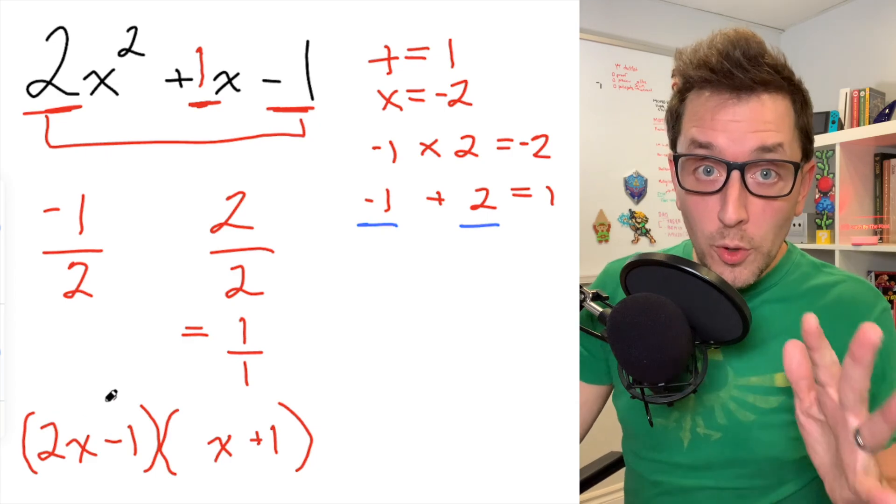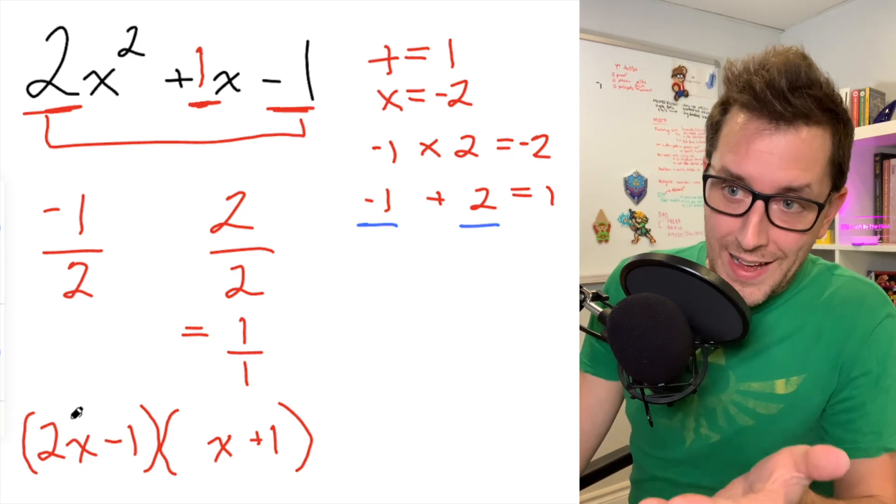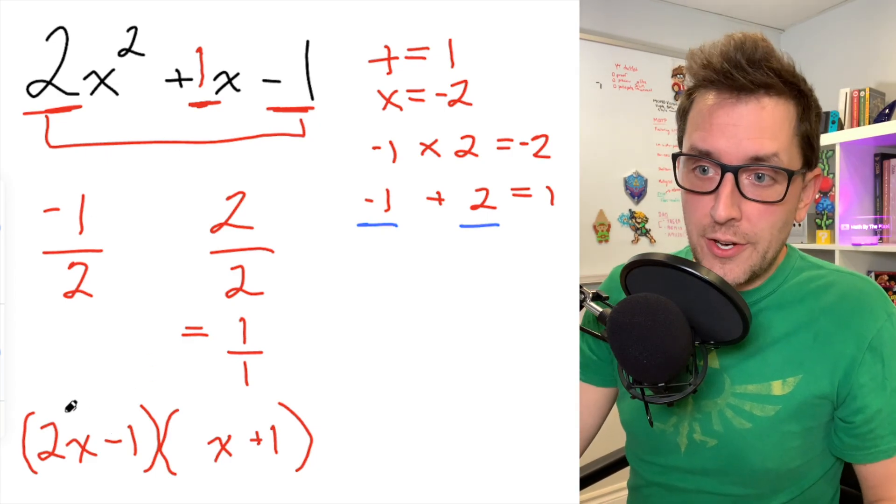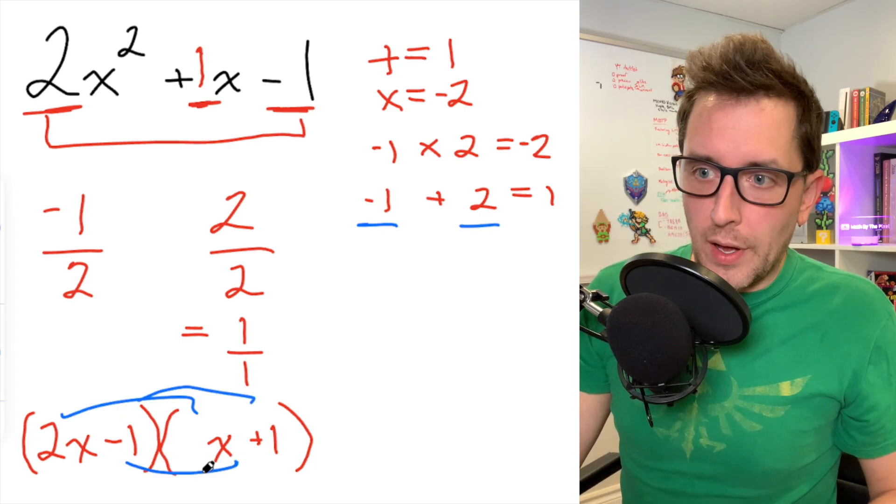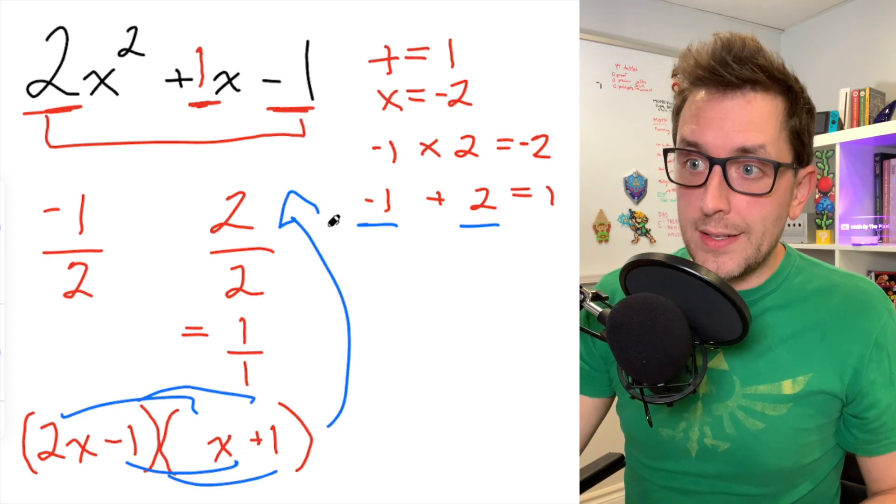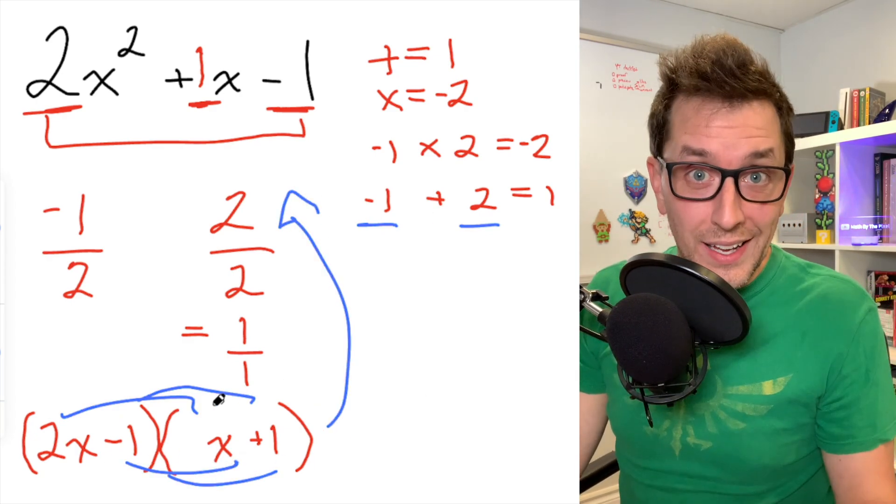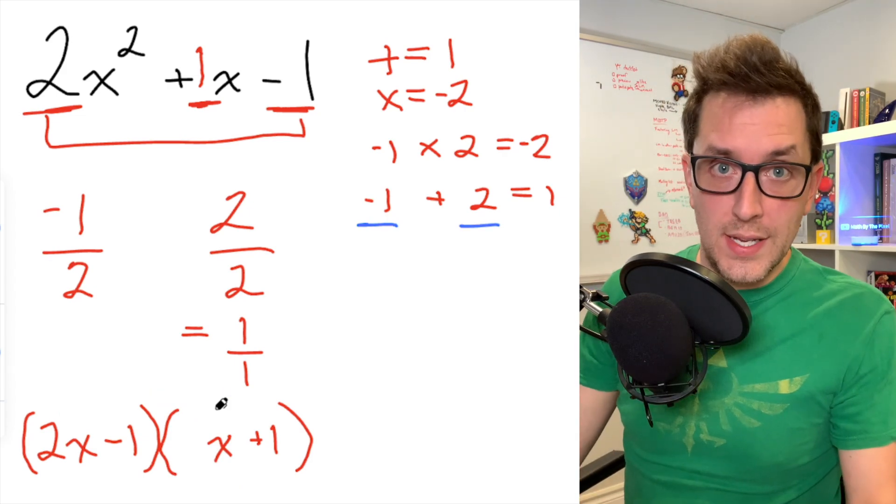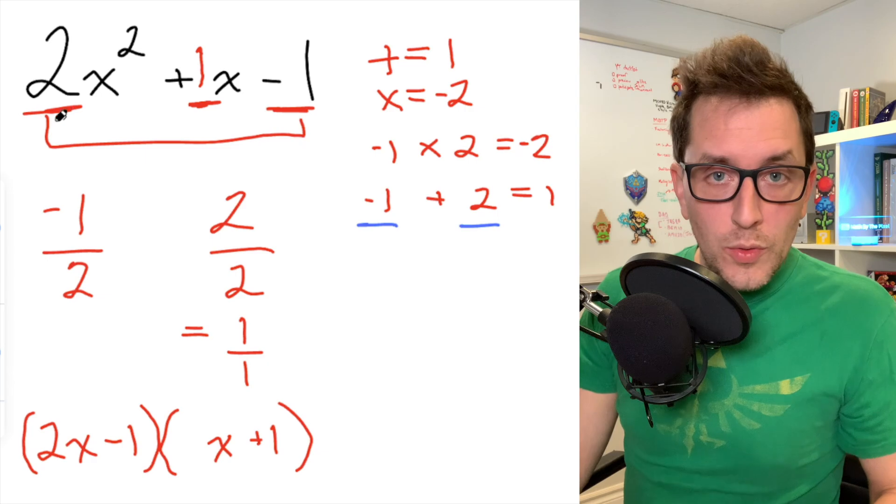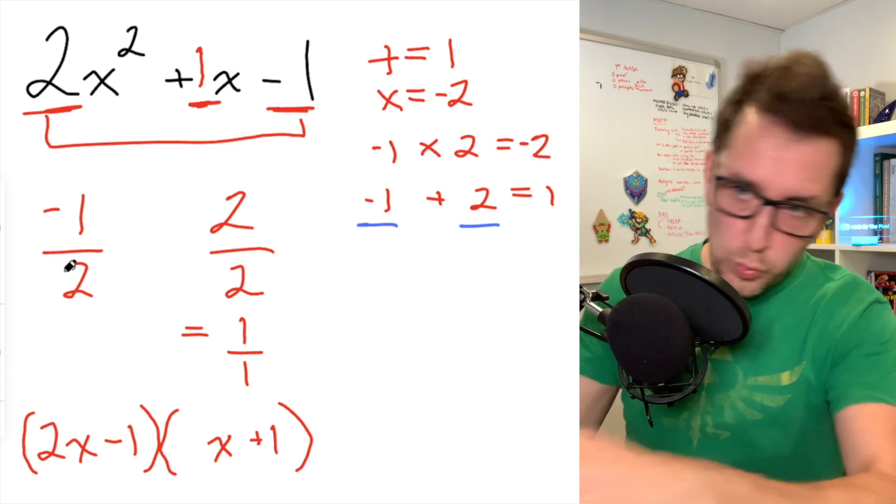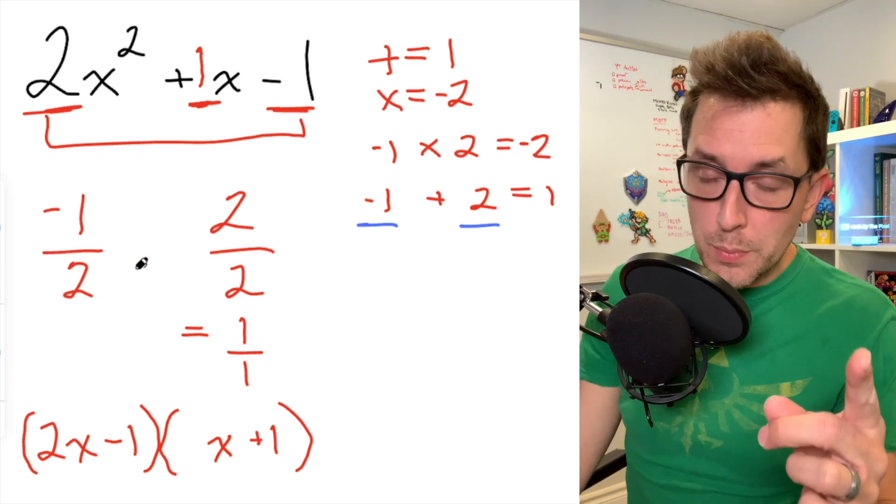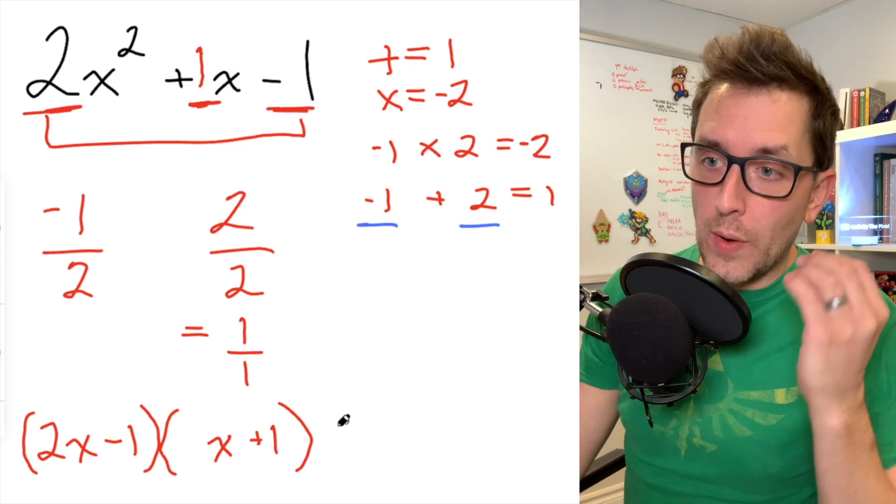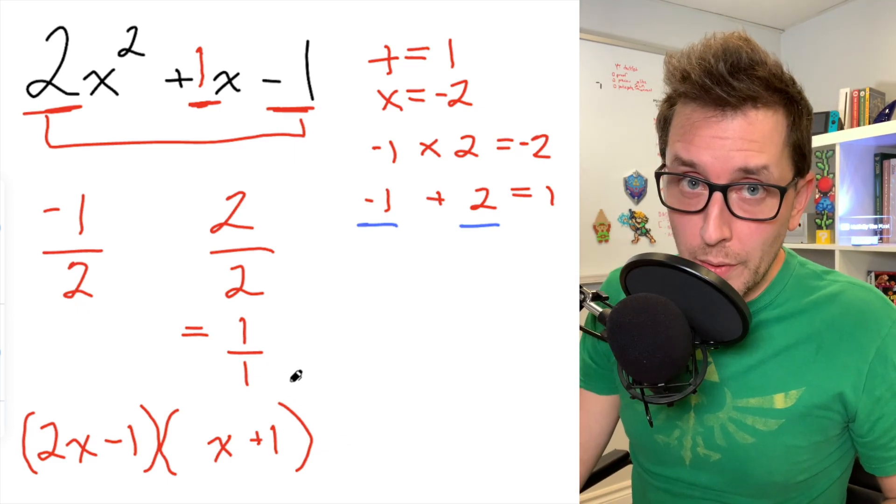Now, if you don't believe me that this is the correct factored form for this expression, you can actually check your answer just by expanding and simplifying. And you're going to see that you do, in fact, get the original trinomial back again. And I promise this is going to work every single time you apply this process. If you have an a value that is not equal to 1, and you follow this process, and you roundhouse kick those fractions after you simplify them, you will end up with the correct factored form expression for the trinomial that you are working with.